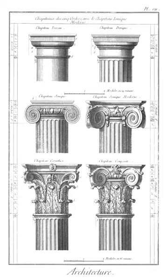Pteroma: in classical architecture, the enclosed space of a portico, peristyle, or stoa, generally behind a screen of columns.